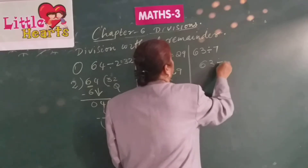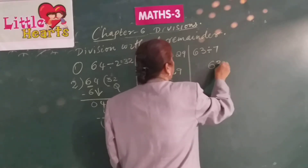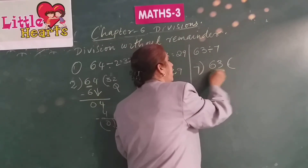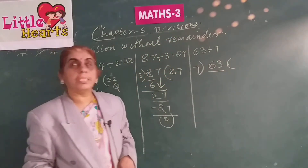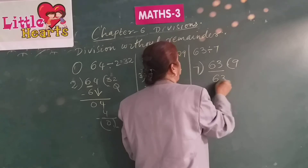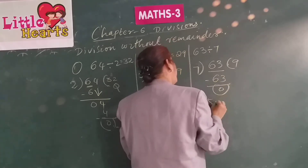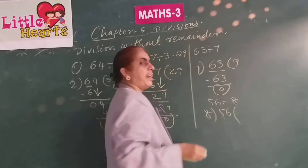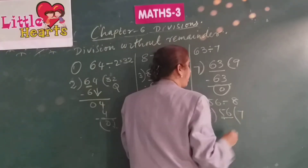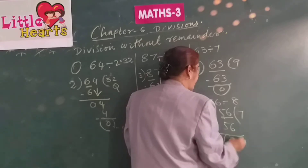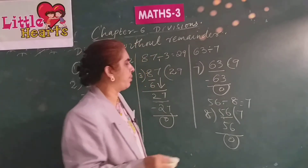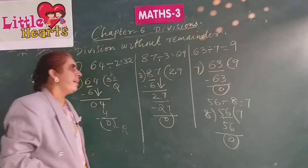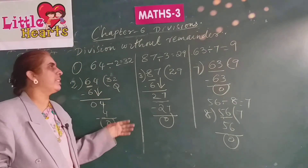63 divided by 7: as 6 is smaller than 7, take 2 digits — 63. Read 7 table until you get 63: 7 nines are 63. So the quotient is 9. 56 divided by 8: as 5 is less than 8, consider 2 digits — 56. Read 8 table: 8 sevens are 56. So 56 divided by 8 equals 7, and 63 divided by 7 equals 9. In this way, a 2-digit number can be divided by a single-digit number without remainder.